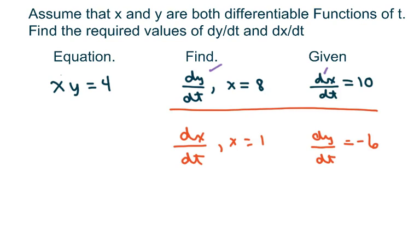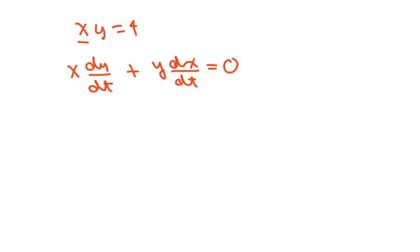So the first thing we're going to do is take the derivative of our function. Our function is x times y equals 4. I'm going to use the product rule and differentiate x, so I write down x and then differentiate y with respect to t, then you add your y and then differentiate your x with respect to t. The 4 goes away, the derivative of 4 is just 0.